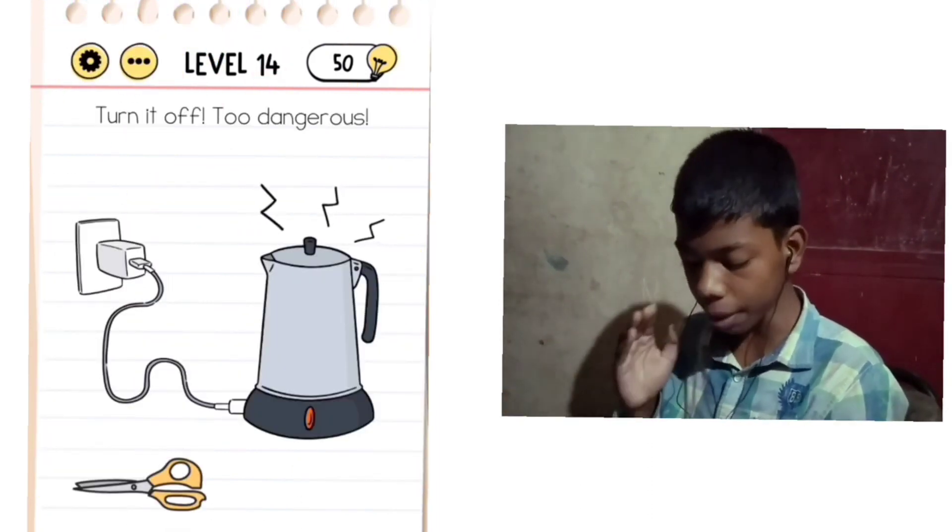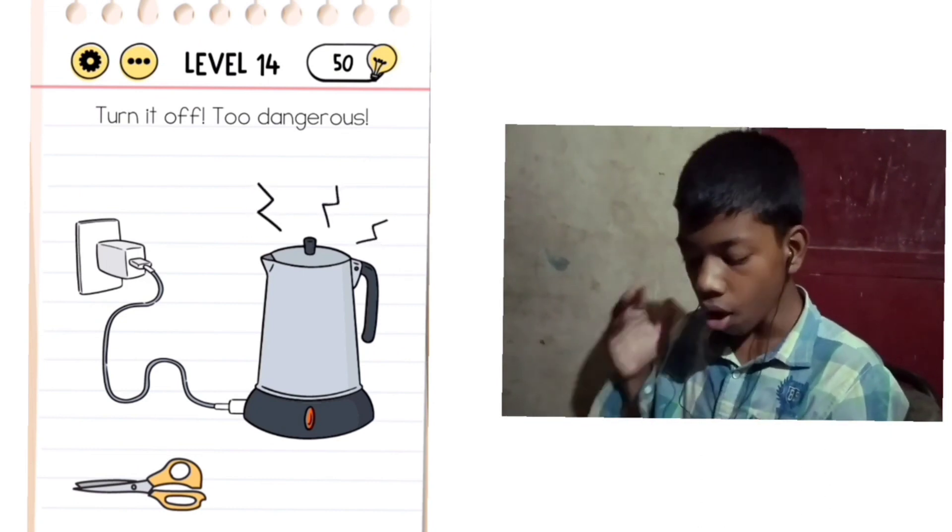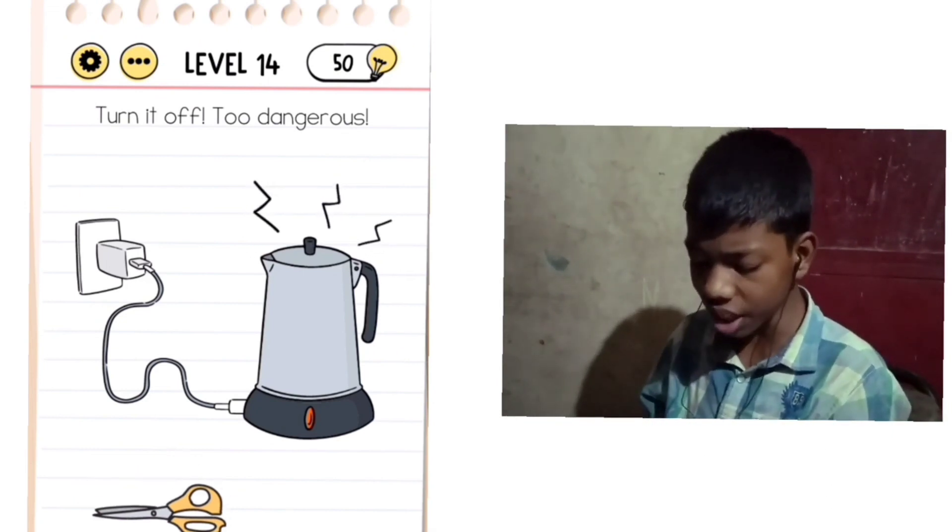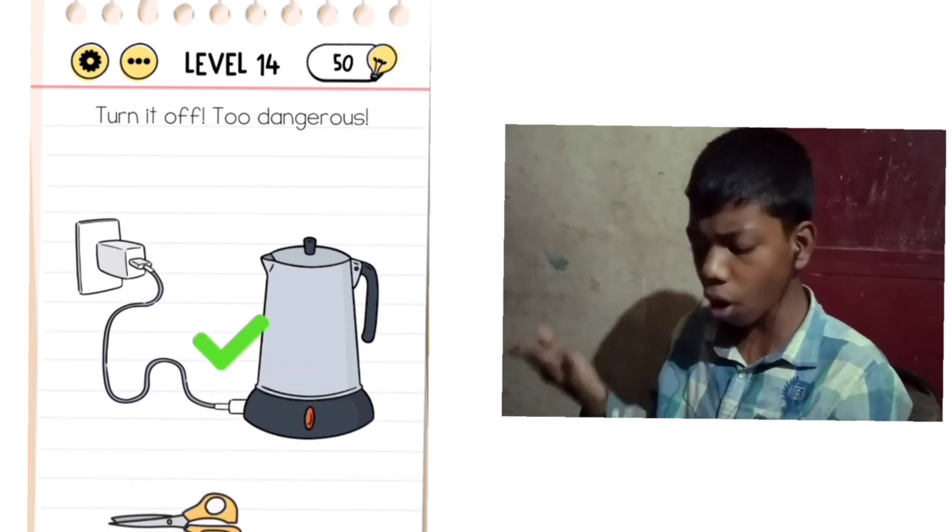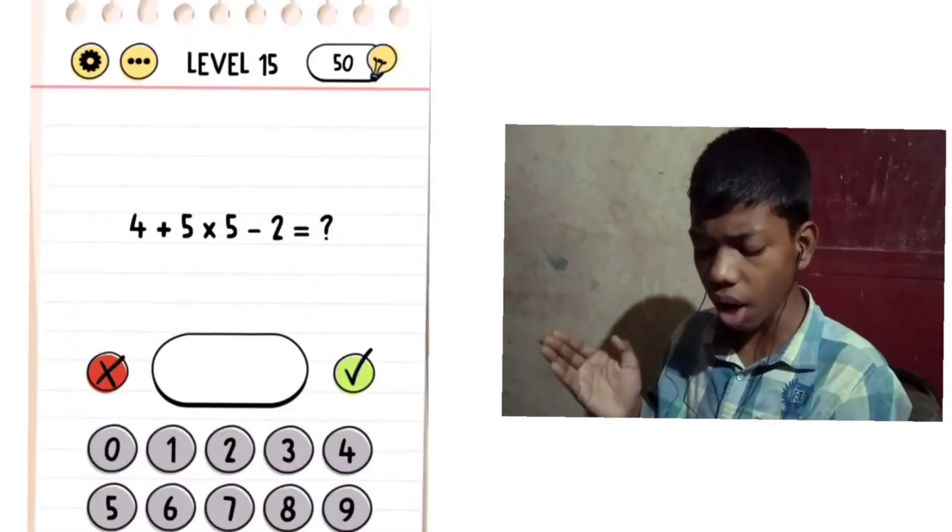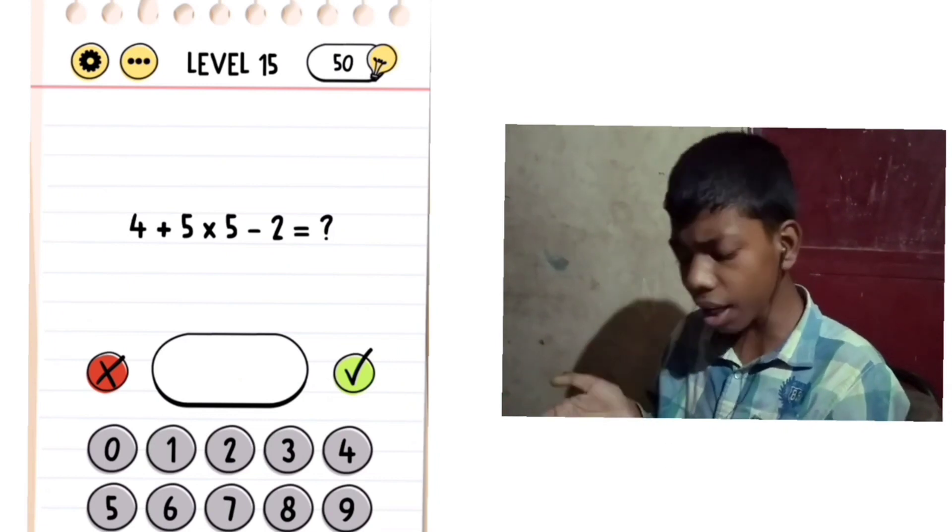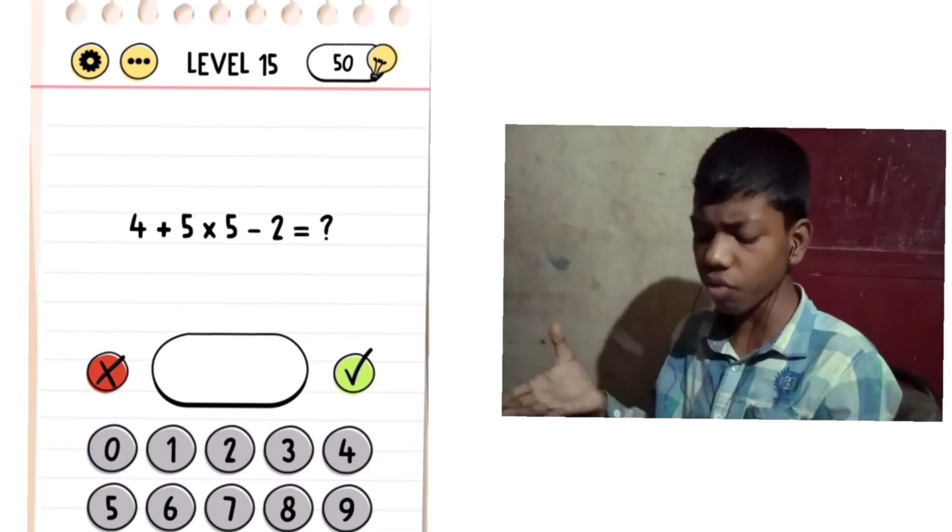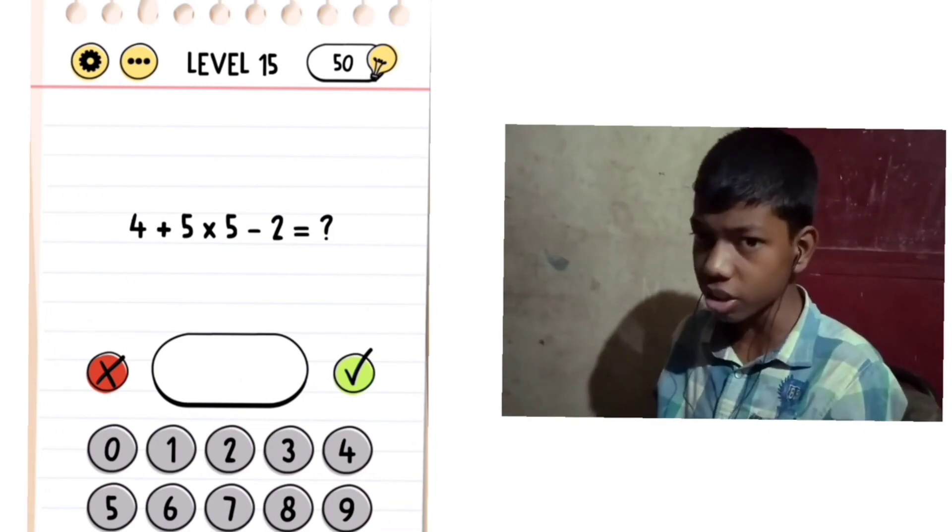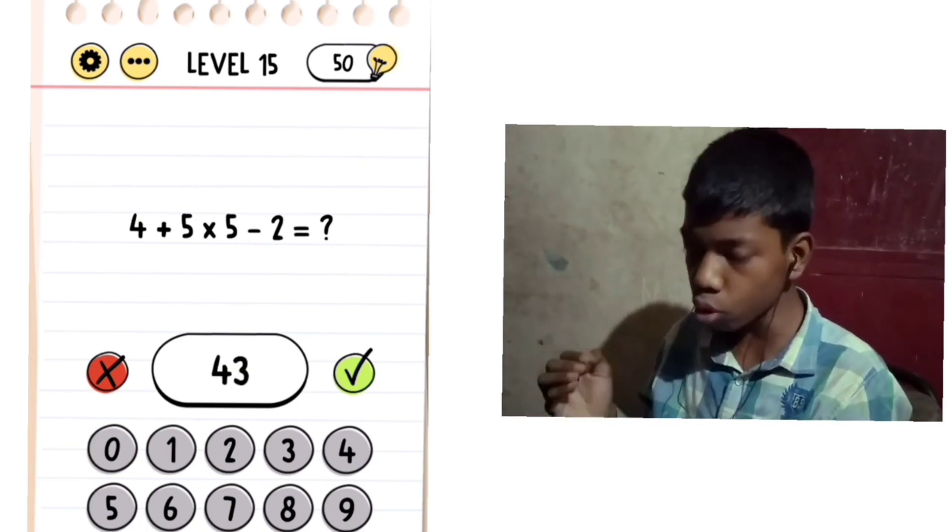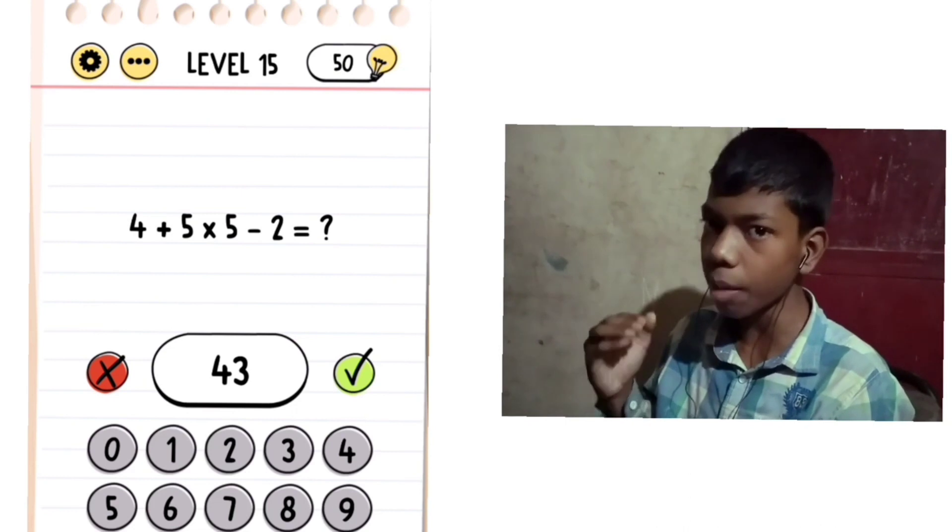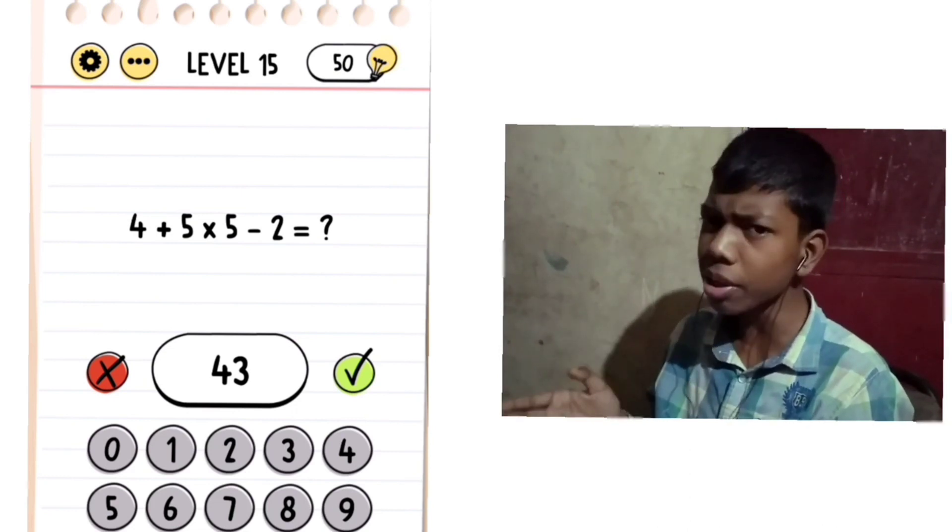Level 14: Turn it off, it's dangerous. Here we have a mixer with electricity. We have to use the button to turn it off. It was very easy. Level 15: 4 plus 5 times 5 minus 2. You have to solve this math question. If you know math, you will easily solve it. There are many viral videos about DMAS. We have to use DMAS: Division, Multiplication, Addition, Subtraction. First we multiply, so 5 times 5 is 25, then 4 plus 25 minus 2 equals 27.